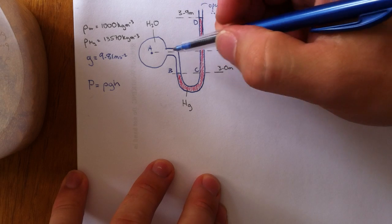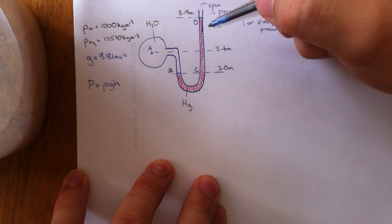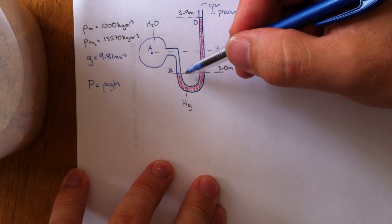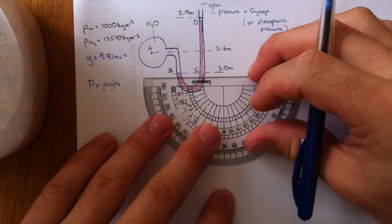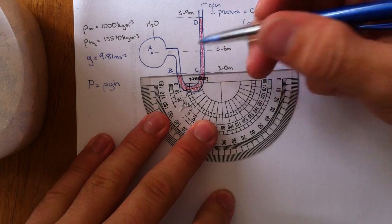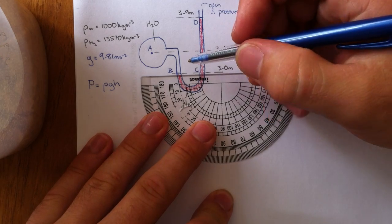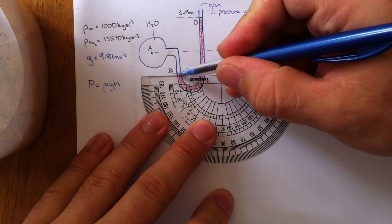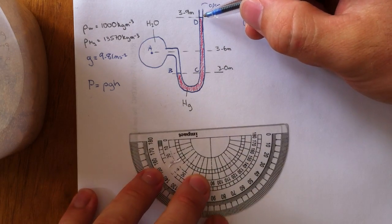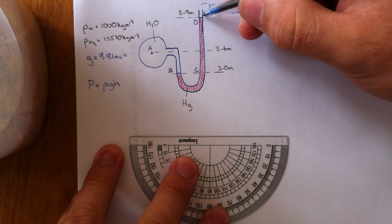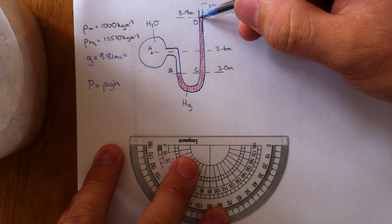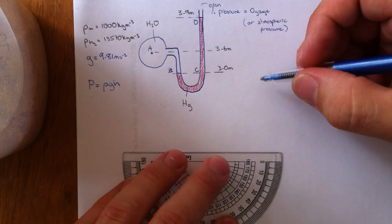Okay, we will establish a few things we can see straight away about this problem. Using the lever rule we can see that these two points here are in the same line and therefore will have the same pressures. We can also see that this point at the top here is open to the atmosphere, therefore its pressure is 0 at this point.